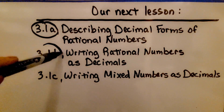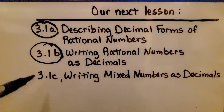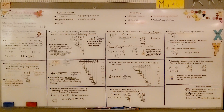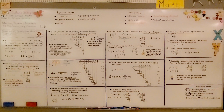We're finished with 3.1b. We're going to move on to 3.1c, writing mixed numbers as decimals. We did that a little bit in this lesson, but let's try some more. Remember, we can keep dividing until we get a 0 remainder by adding more and more 0s to the right side of a decimal point. Have a wonderful day, and join me for the last part of the lesson.